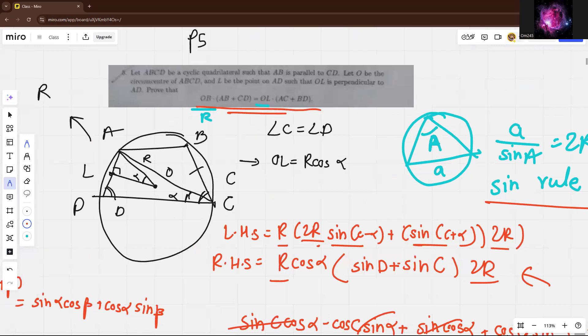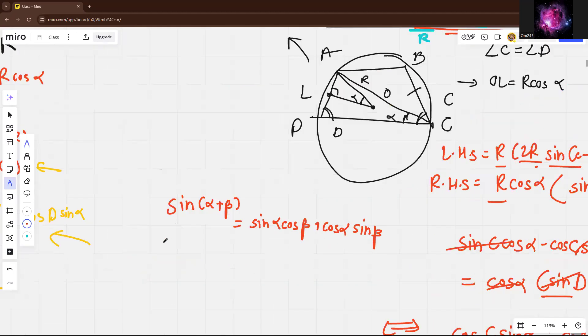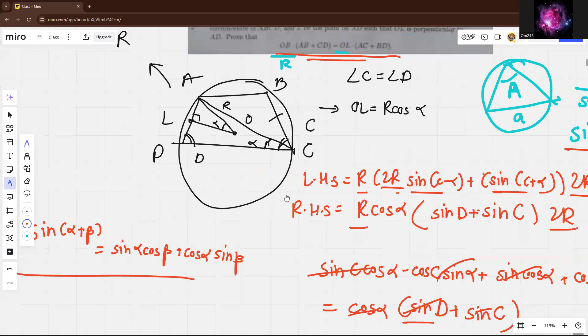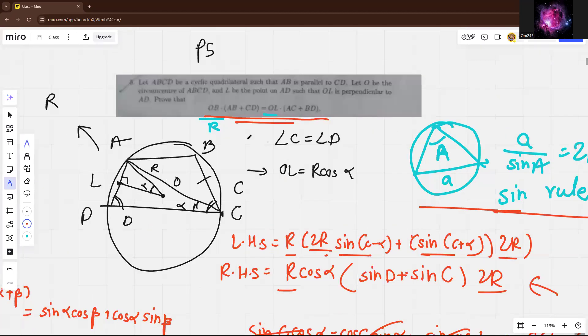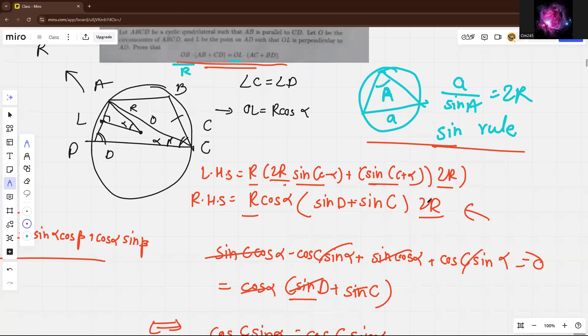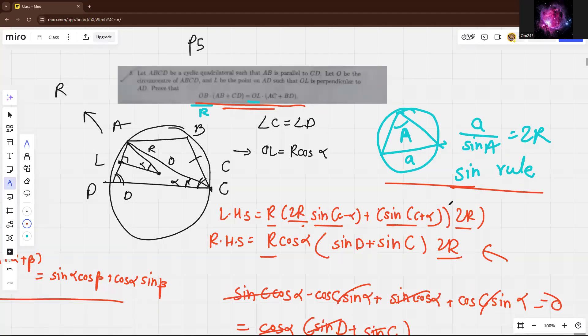So the key point in the problem is just know this expansion and also sine rule. Because we have some weird length condition, you're motivated to use sine rule and just trigonometry. This is not a really hard problem and not even a good problem, just like easy sine. So thanks for watching.